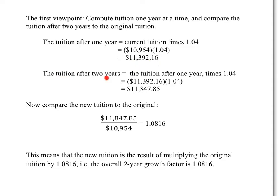So what's the tuition after two years? It's this tuition, the tuition after one year, the 2015 tuition, times another copy of the growth factor. So it's this $11,392.16, the result of a single growth, now experiences another 4% growth. So that number going into the 2016 school year has to get multiplied by 1.04 to find out that new tuition in 2016. That's $11,847.85.